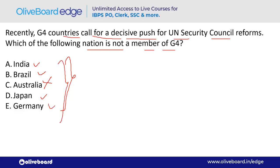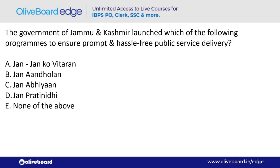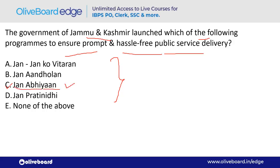The government of Jammu & Kashmir launched which program to ensure prompt and hassle-free public service delivery? The name of the program is 'Jan Abhiyan' — option C.